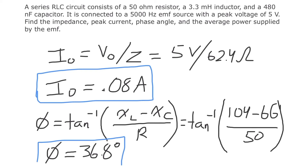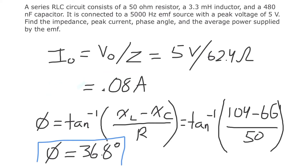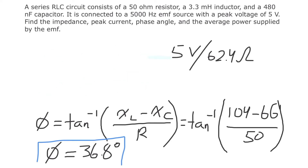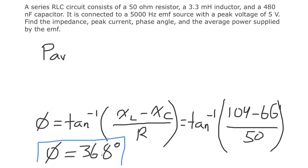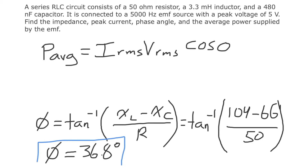Finally, we need the average power supplied by the EMF. The formula for average power in an RLC circuit is the RMS current times the RMS voltage times the power factor, where the power factor equals cosine of the phase angle. To find the average power, we need to determine the RMS current and RMS voltage.